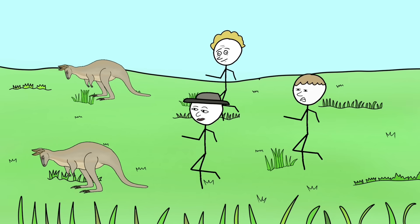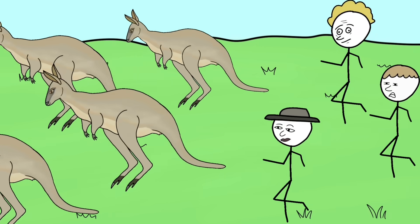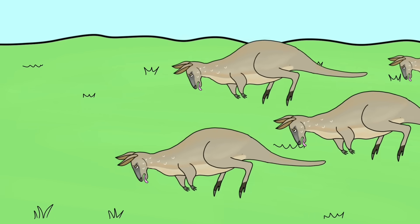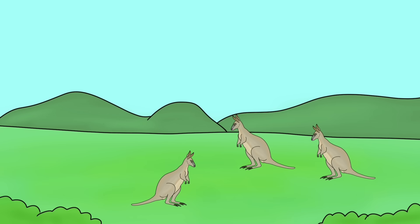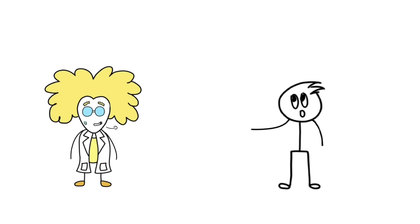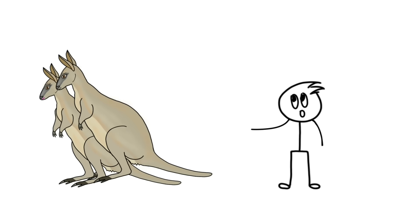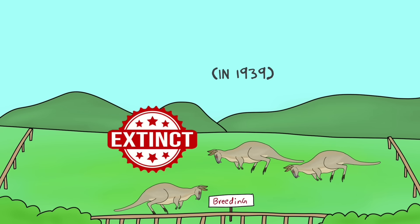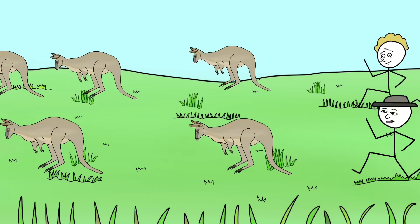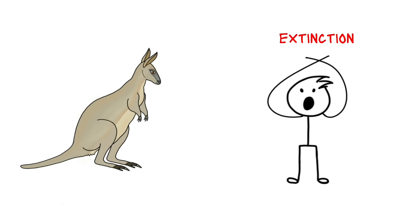After a long chase, most of the wallabies collapsed of panic and exhaustion. And they died. Just a couple of survivors were taken to captivity. Scientists tried their best to breed the remaining ones. But they couldn't succeed. They started dying. The last female died in 1939, making the species extinct. The act of conservation actually led to the extinction of wallabies.